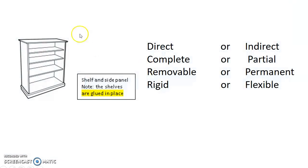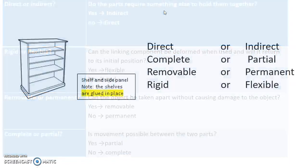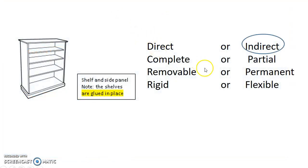Let's answer a question: a shelf has side panels attached with glue. Is this direct or indirect? Since glue is a third party, it is indirect. Is it complete or partial? Once set in place it does not allow movement, so it is complete. Is it removable or permanent? It would get damaged if removed, so it is permanent. Is it rigid or flexible? The two pieces together are rigid.